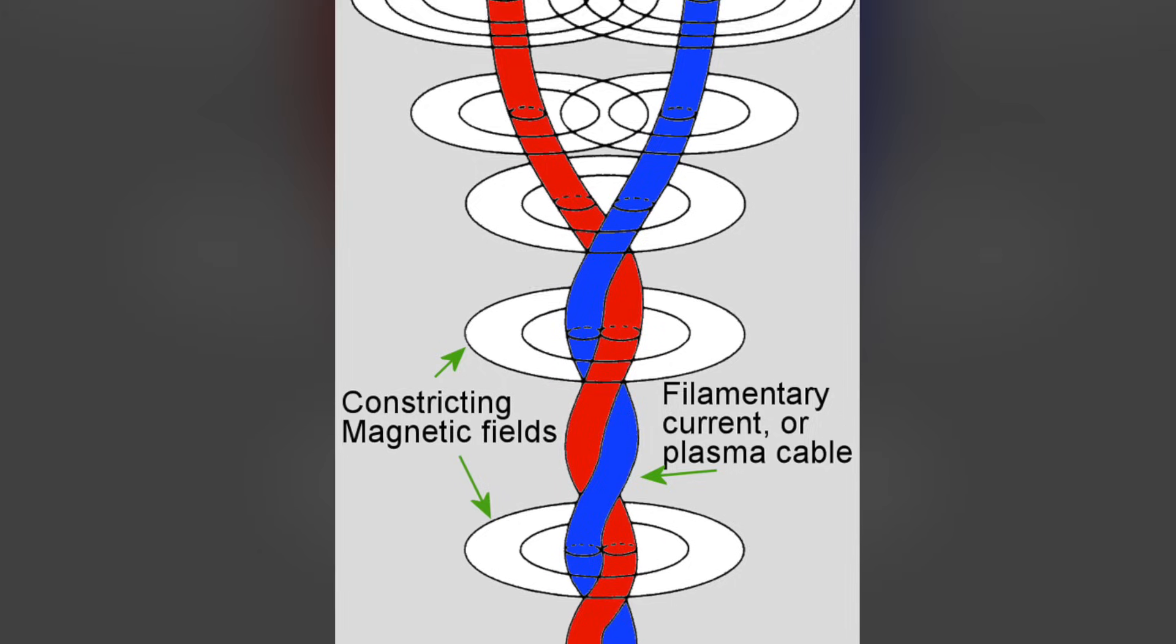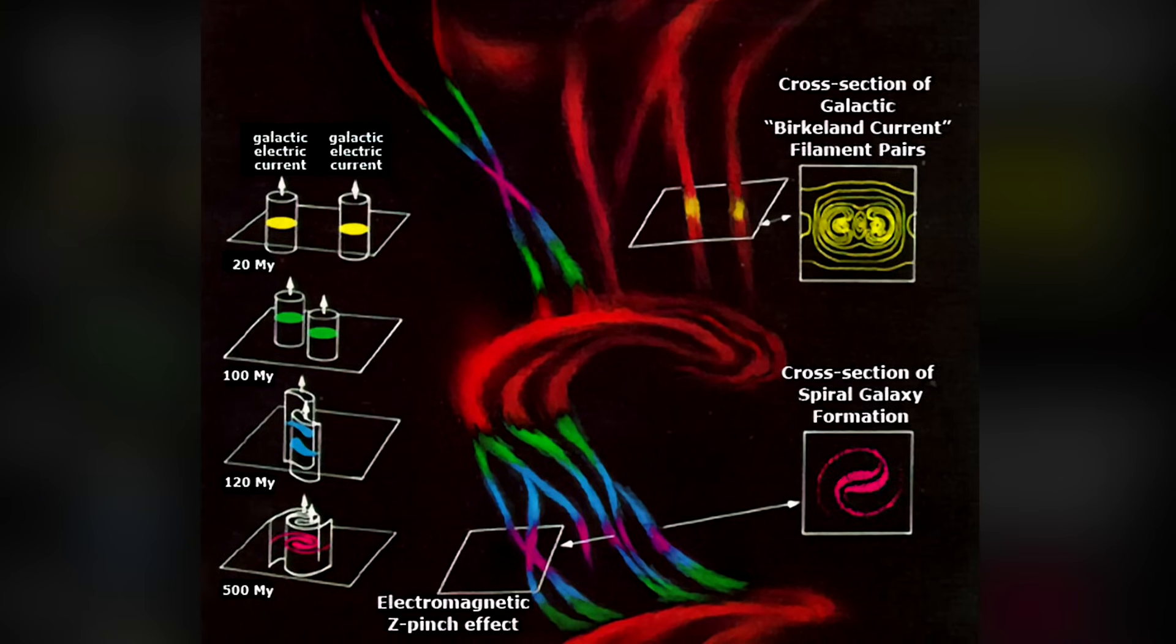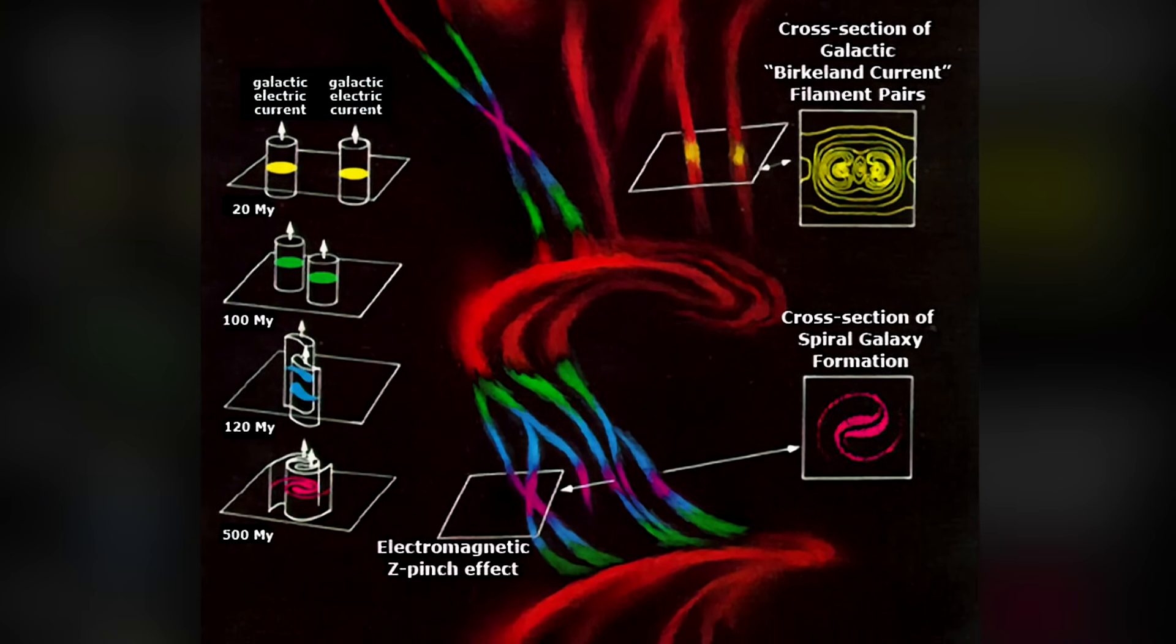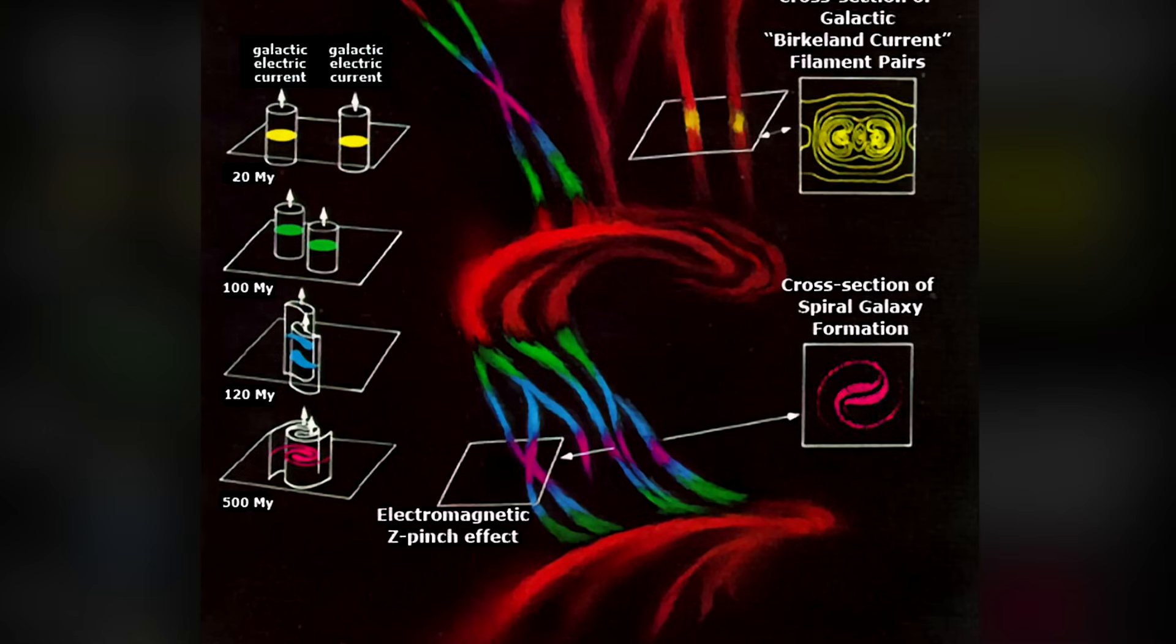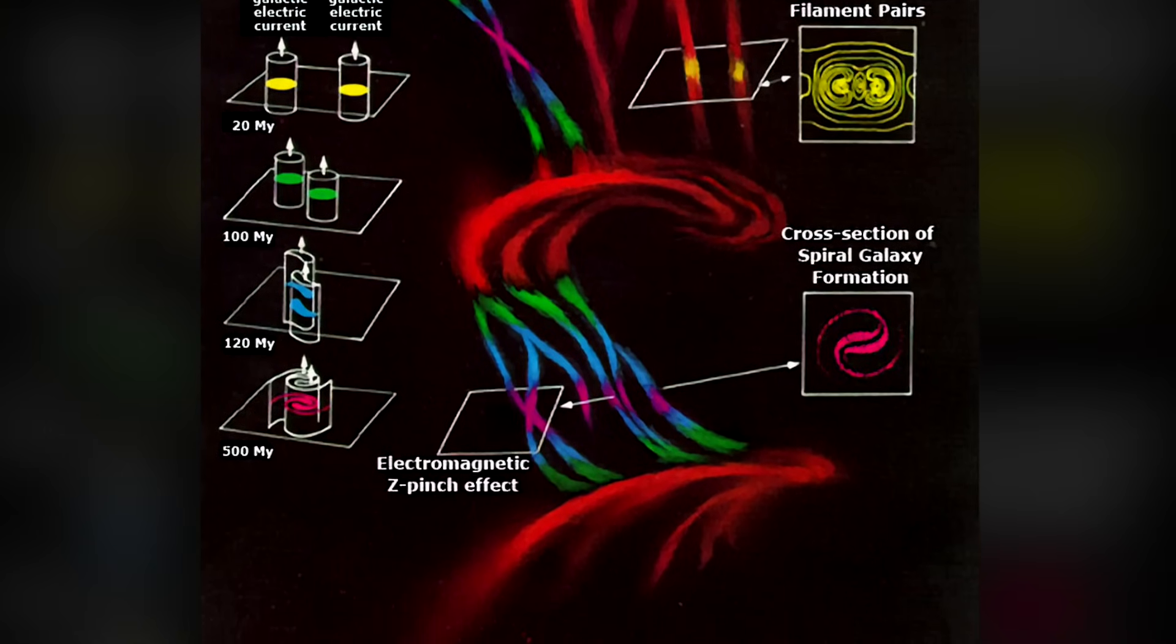But when they get close, instead of merging, they spiral around one another. Pairs of pairs and more sometimes entwine into plasma cables that can transmit electrical power over enormous distances.